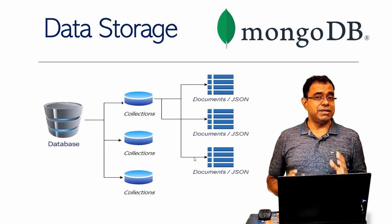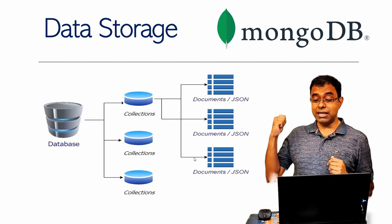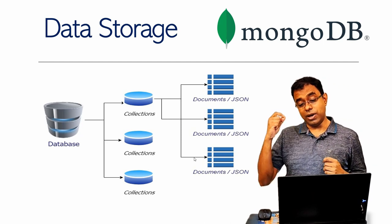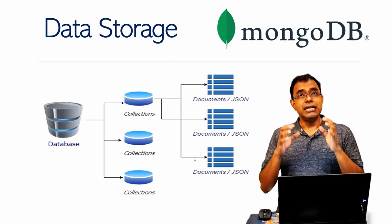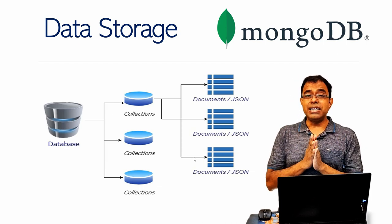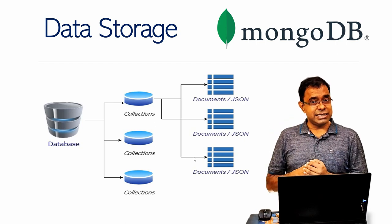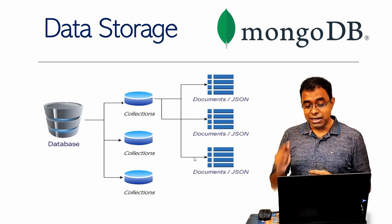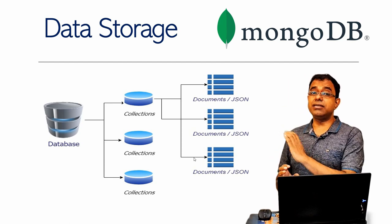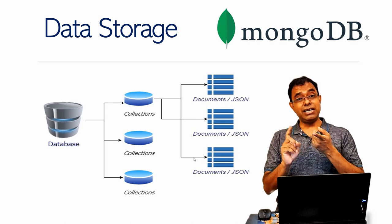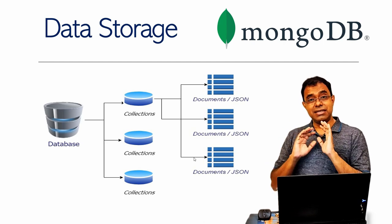In MongoDB, you create a database which can have more than one collection, and each collection can have more than one JSON — called documents in MongoDB terms. For example, consider a school database. It can have collections for student information, faculty information, and support staff information. Each individual will have a single JSON document. So the structure is: you create a database, one database can have one or more collections, and each collection has one or more documents.